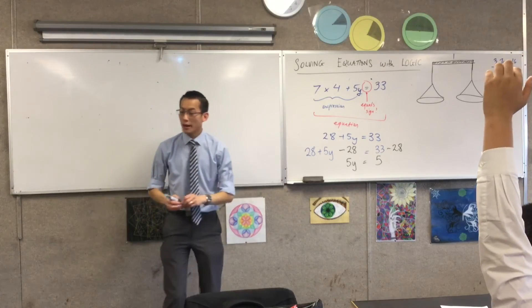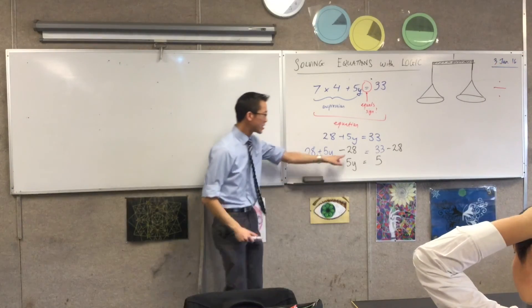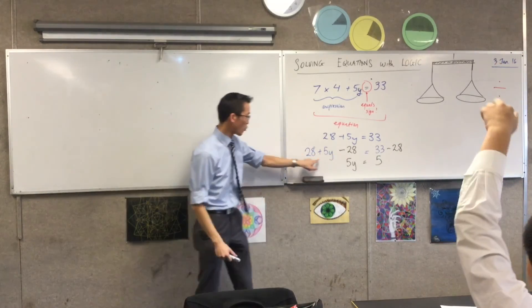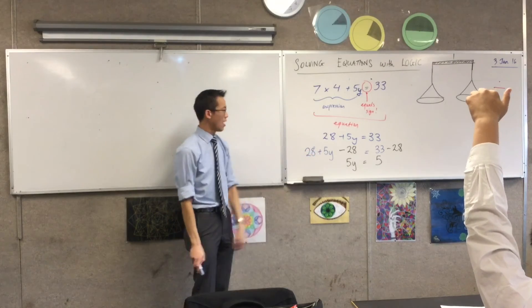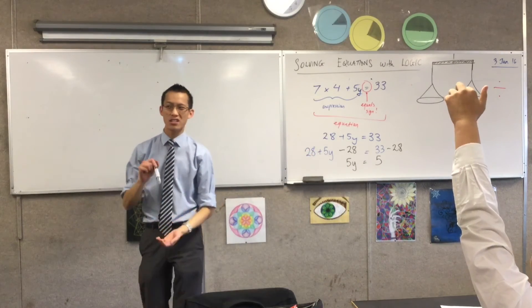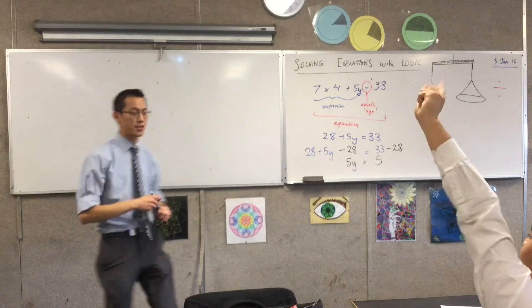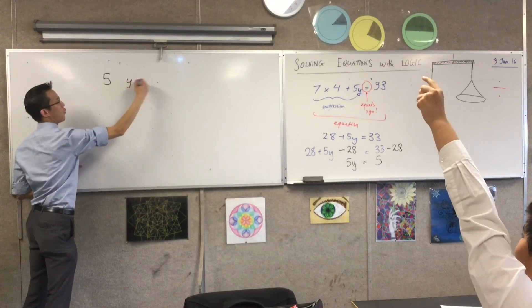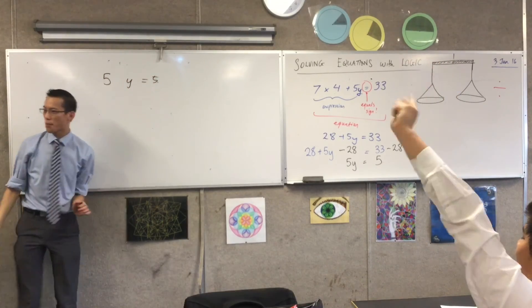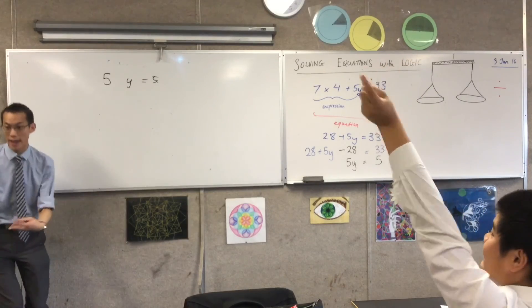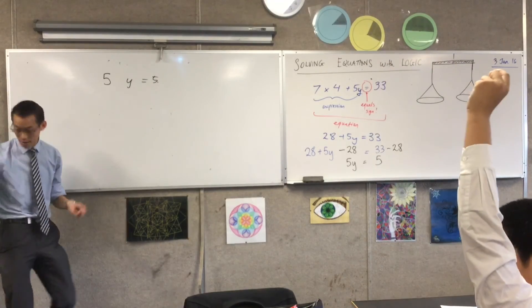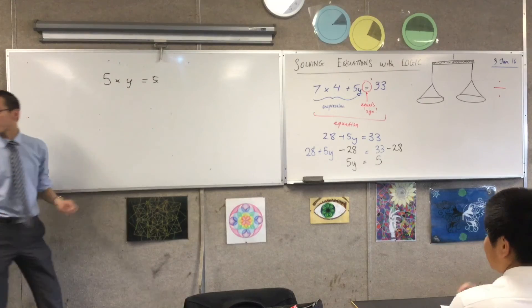You need 5 minus 1. Okay, now subtraction's a great idea. Subtraction worked last time. It got rid of this 28 business. But unfortunately, subtraction's not going to work for us this time. Why isn't it? What's the operation between 5 and y that's actually implied? It's multiplication, so you need to do the opposite, which is division. Very good.